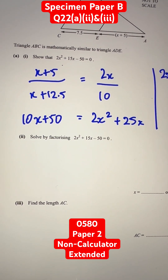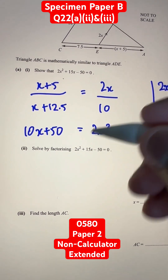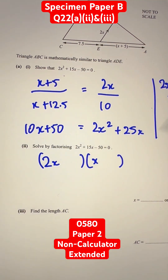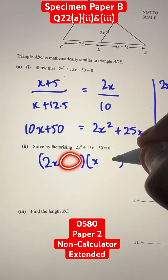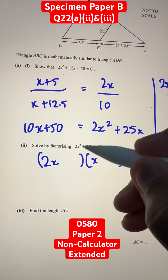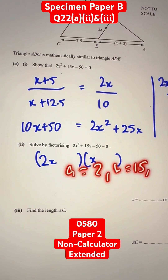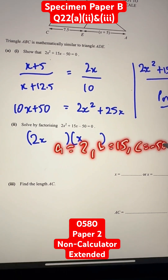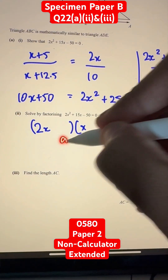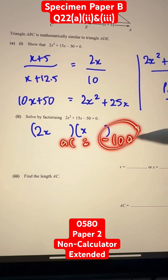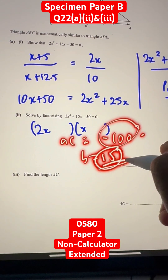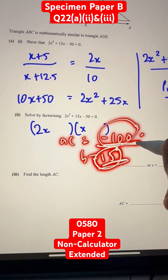In this case, we'll be splitting this into two brackets since it's a quadratic. One bracket will have 2x, the other will have x, with some constants. We know that a is equal to 2, b is equal to 15, and c is equal to negative 50 in this quadratic expression. So, ac is equal to negative 100, and b is equal to 15. Let's find two numbers that add up to 15 and multiply to negative 100.